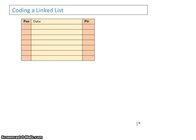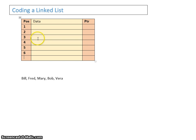In this video we're going to look at how we start coding a linked list. Let's have a recap: we're going to take a few items — Bill, Fred, Mary, Bob, and Vera — and add them to the linked list in that order. Putting the position numbers in, we add them as Bill, Fred, Mary, Bob and Vera. We've initialized the linked list.